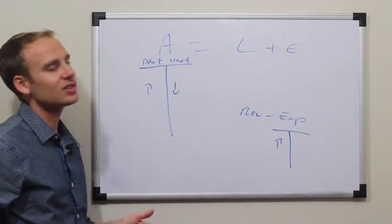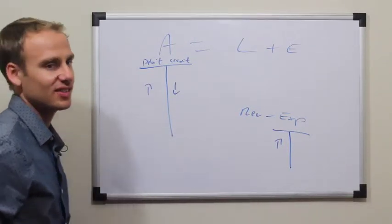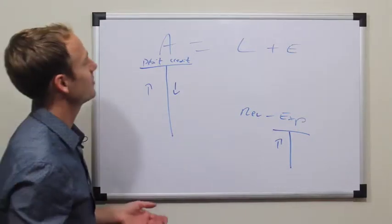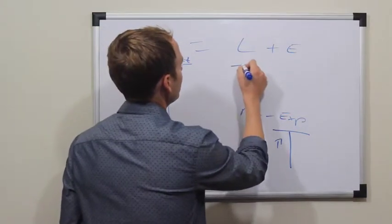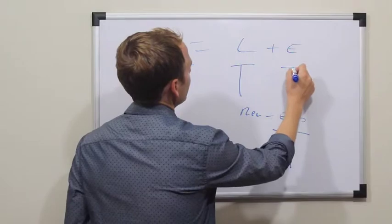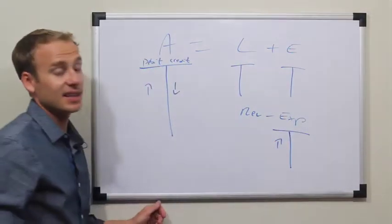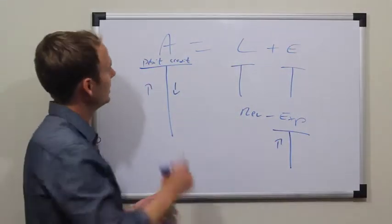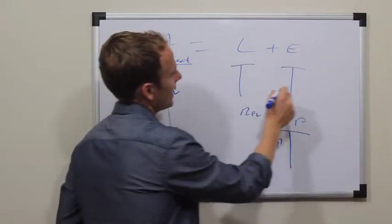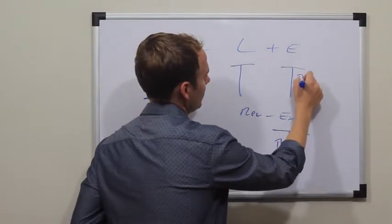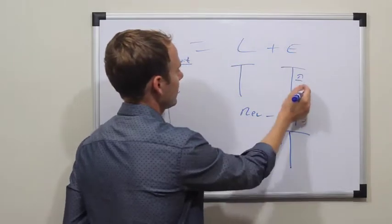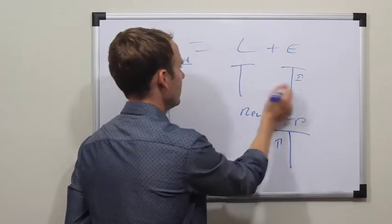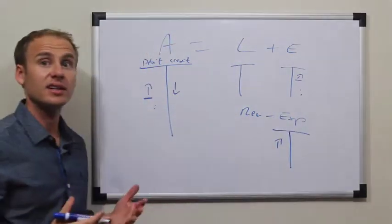Now, once you start doing other entries, such as receiving outside investment, then you also would affect other accounts. In the case of another investment, it would be an increase to cash and an increase to equity. Debit, credit, debit, credit, offset.